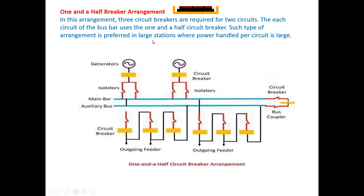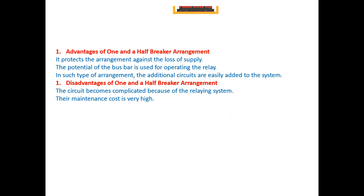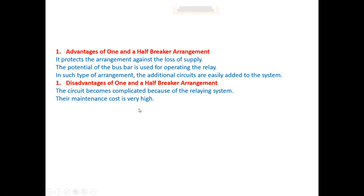Advantages of the breaker and half scheme: protects against loss of supply, continuity of power supply is maintained, most flexible operation, high reliability, and simple in operation. Failure of any bus-side breaker has supply provided by another bus. Disadvantages: one and a half breakers are required per circuit, relaying and automatic reclosing is difficult, the circuit breaking scheme is complicated, and the maintenance cost is very high.